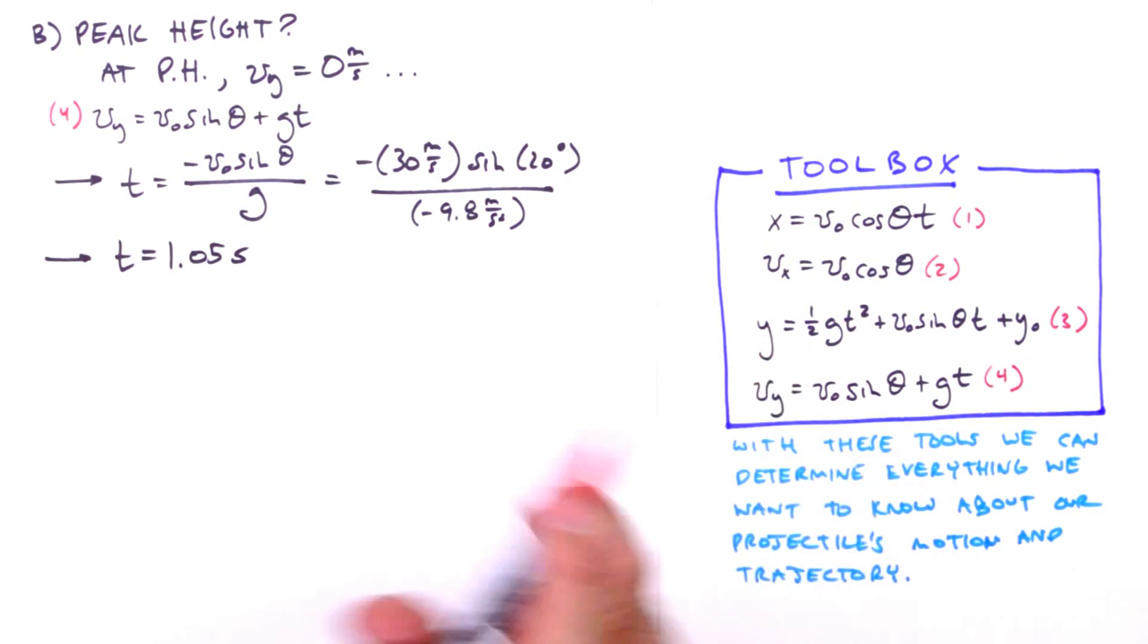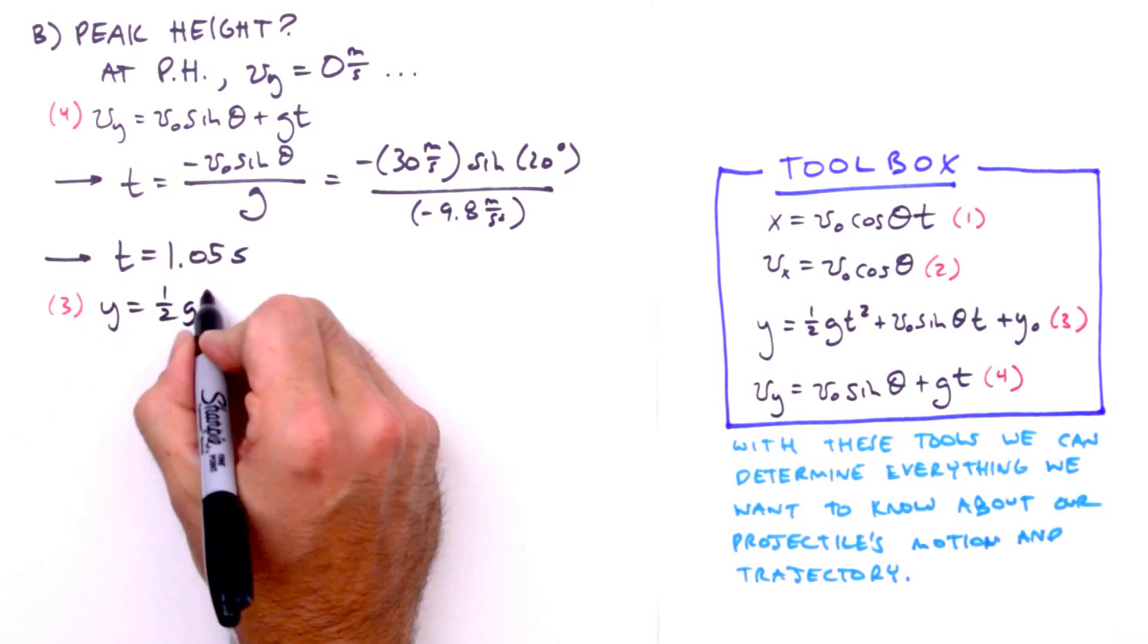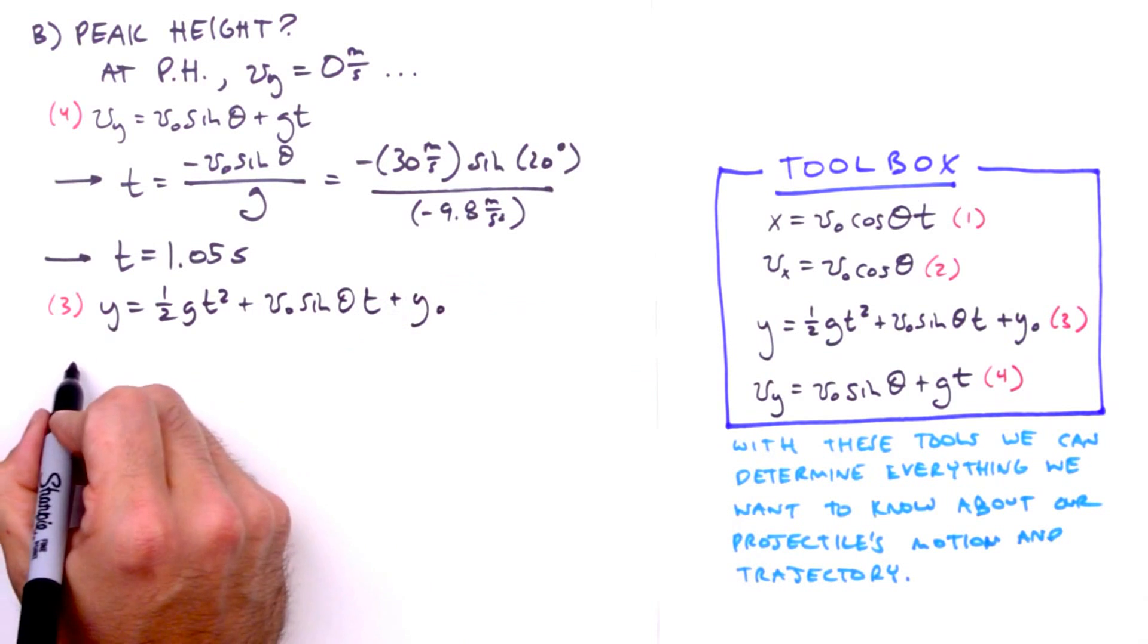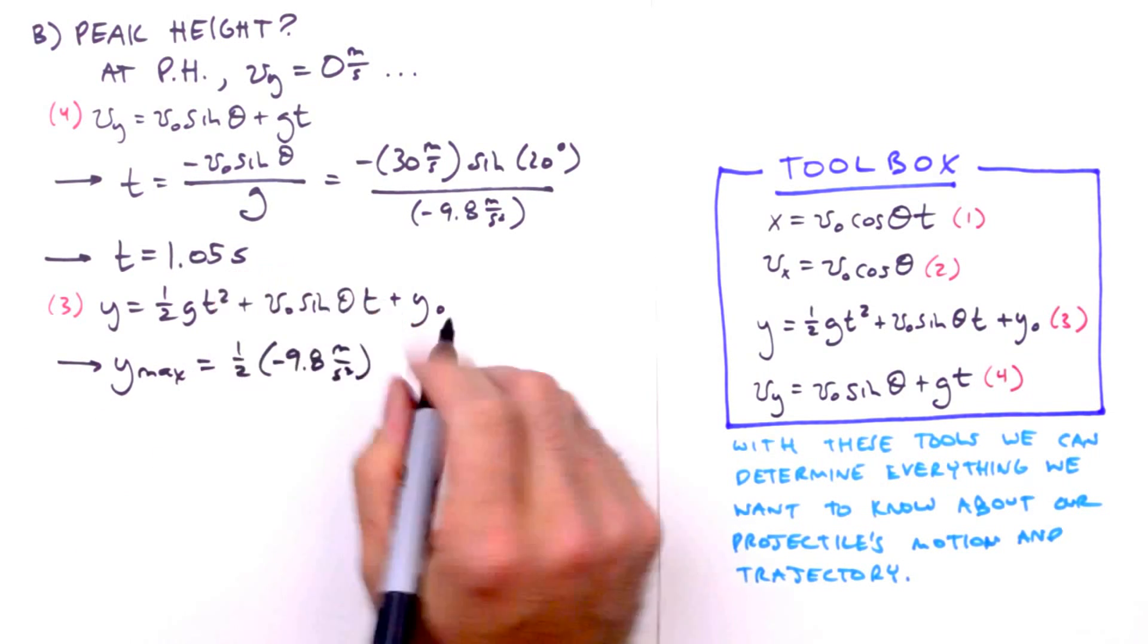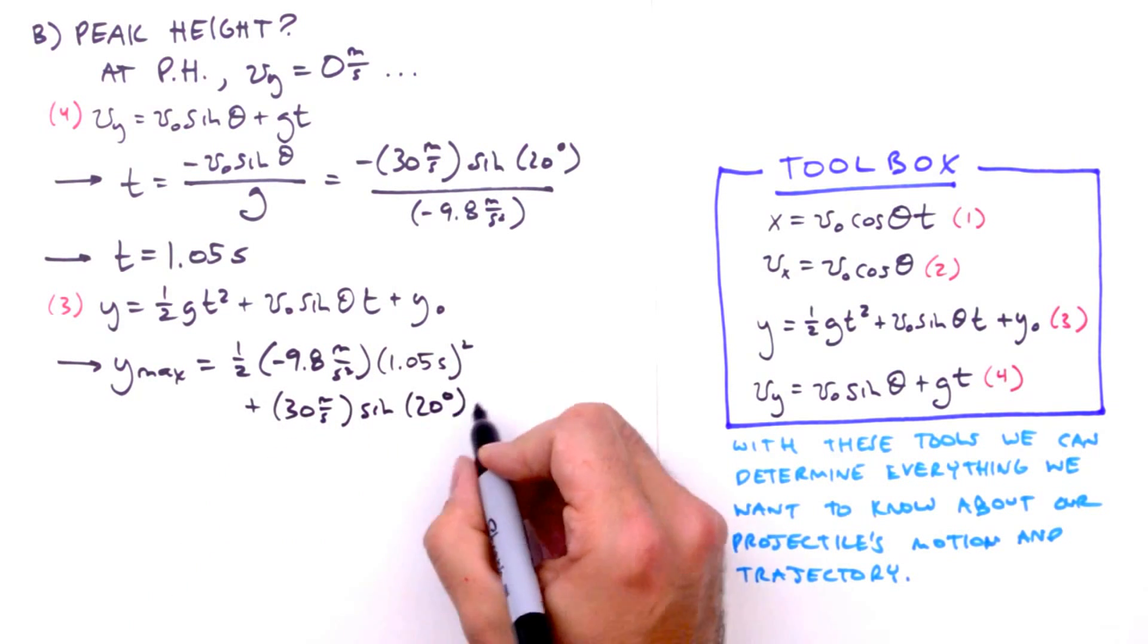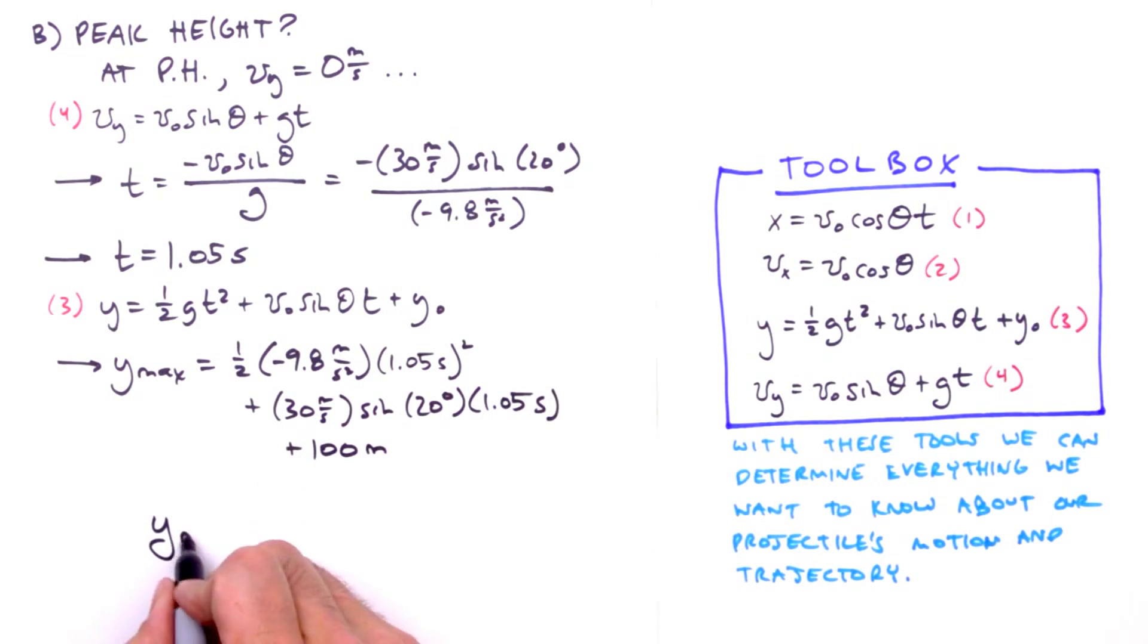Now we'll insert this time into equation 3 to determine the maximum vertical displacement of our projectile. And when we assign our values to the variables, using 1.05 seconds, the time coincident with y max, for t, we find that our projectile reaches a peak height of 105.4 meters. Not very impressive, but very reasonable given our shallow launch angle.